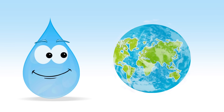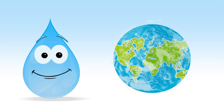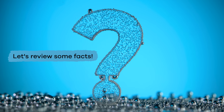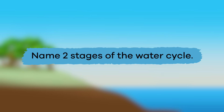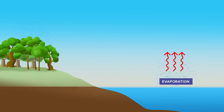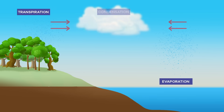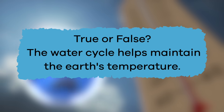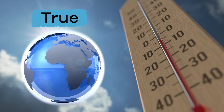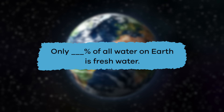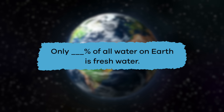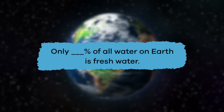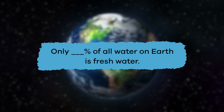It is important to conserve fresh water whenever we can. Now that we have learned about the water cycle, let's go ahead and review some facts. Name two stages of the water cycle: evaporation, transpiration, condensation, precipitation. True or false: the water cycle helps maintain the Earth's temperature. That is true. Fill in the blank: only blank percent of all water on Earth is fresh water. Did you remember it was 3%?